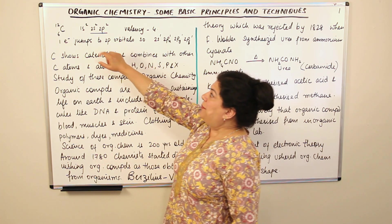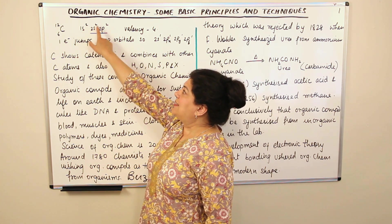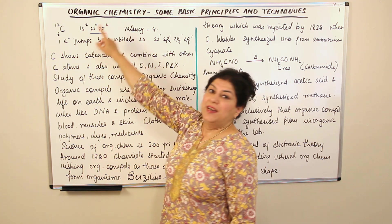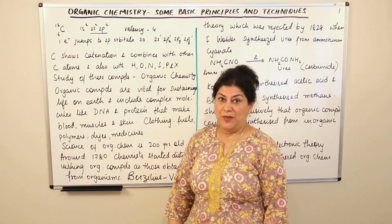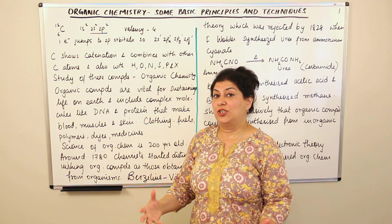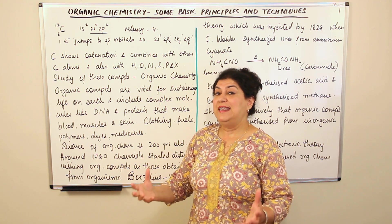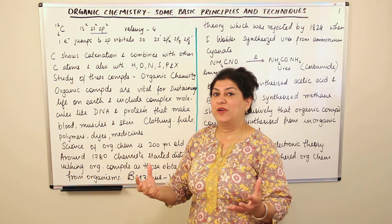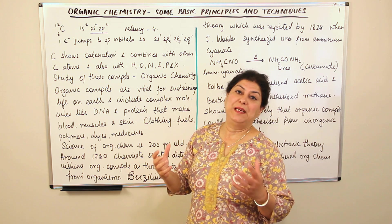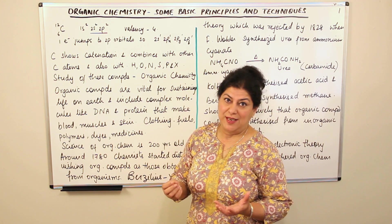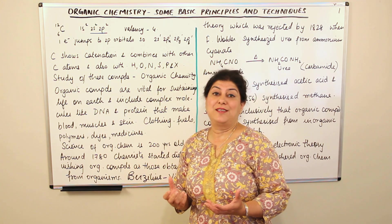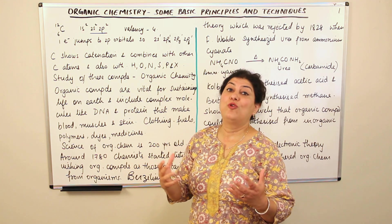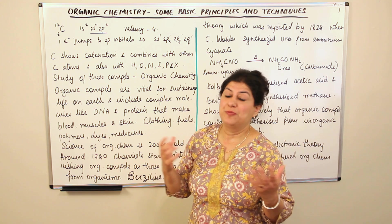Since carbon has four electrons in its outermost shell, according to the octet rule, it needs four more electrons to complete its octet. Therefore carbon has the capacity to form four separate bonds.